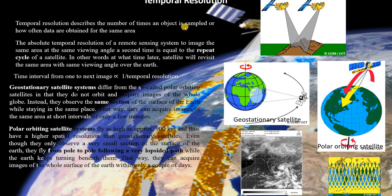In simple words, temporal resolution means: at what time later will the satellite revisit the same area with the same viewing angle? That is, you have one region on the earth, you got some satellite data, and after what time will you get the next data for that same region? For example, you have one region and you got satellite data today morning at 10 a.m., and you know that the temporal resolution of the satellite data is one day.